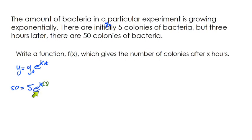So what we can do now - remember, e is not a variable, e is a value - we can solve this equation for k, and then we'll have everything we need to write the general form of our function. I'm going to start by dividing by 5 on each side. So we have 10 equals e to the k times 3.